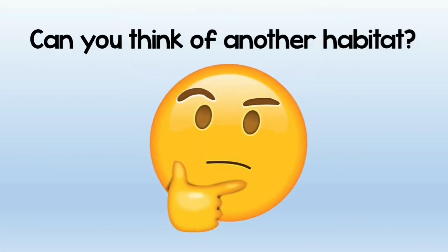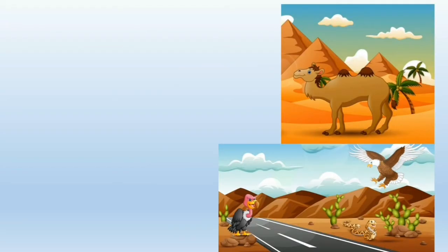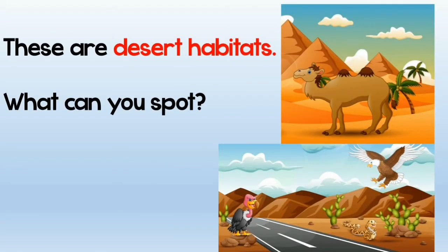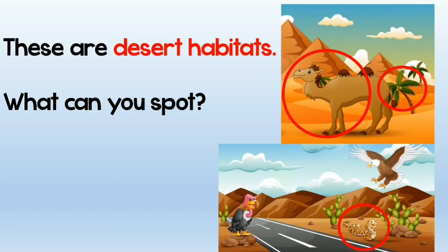Can you think of other habitats? Remember that habitats are the natural place of animals. These are different desert habitats from different places. Some deserts have camels and palm trees; some have cacti, snakes and eagles, depending on which country it is in.